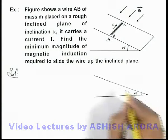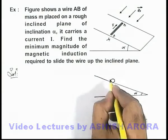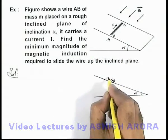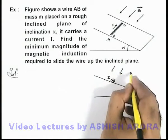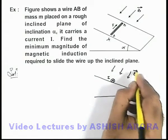If this is the inclined plane with inclination α, and in the side view cross section, if this is the wire which carries a current I, and if a magnetic induction is applied normally to this inclined plane,